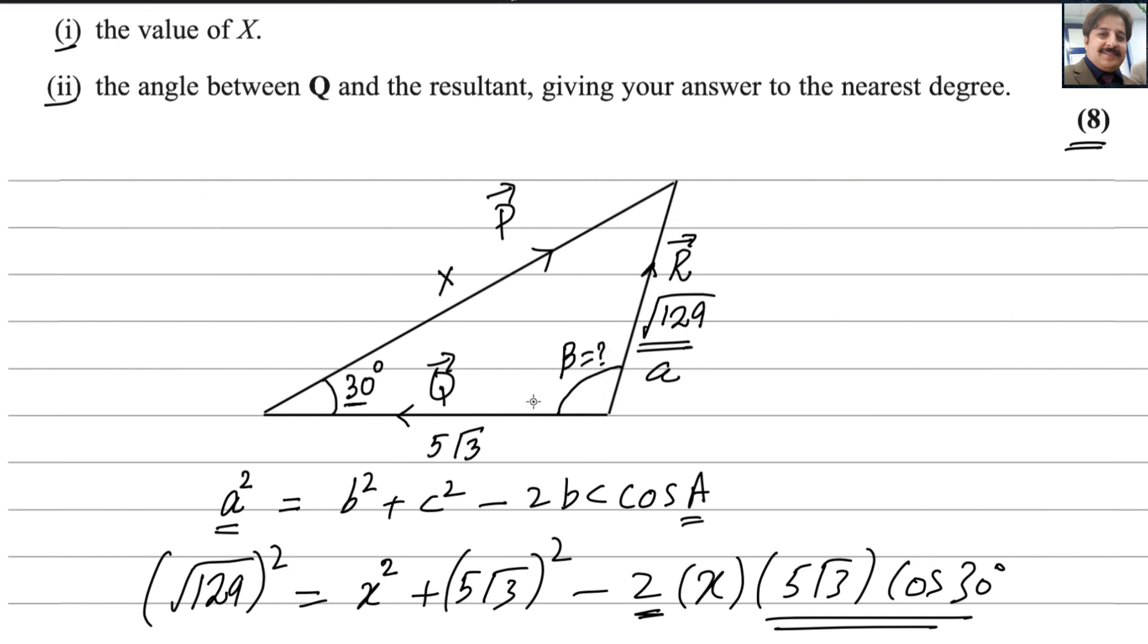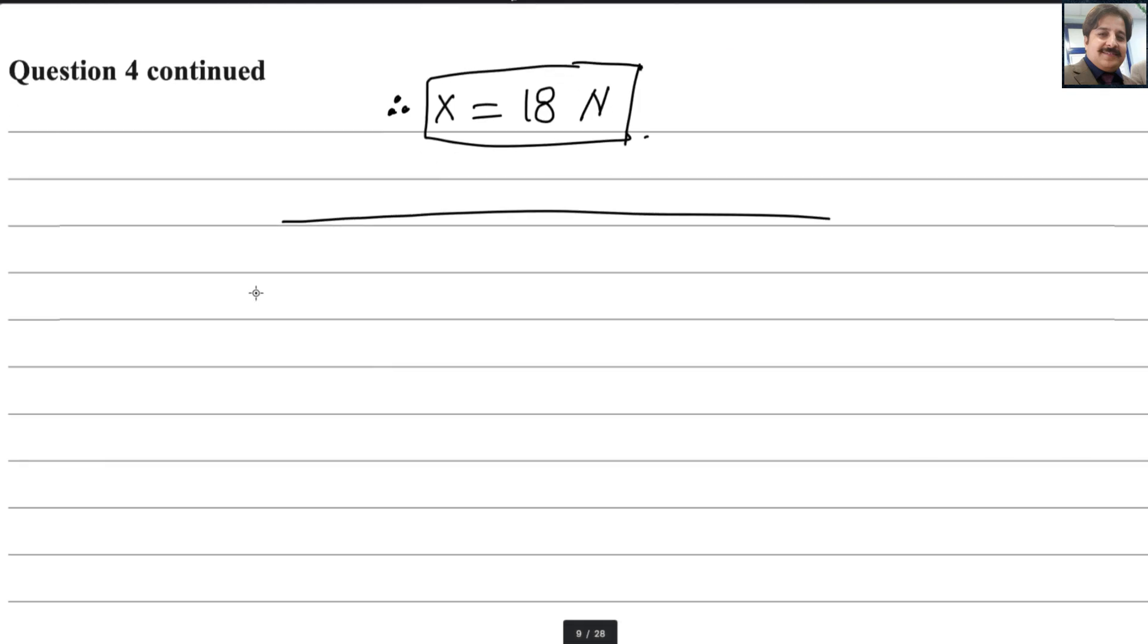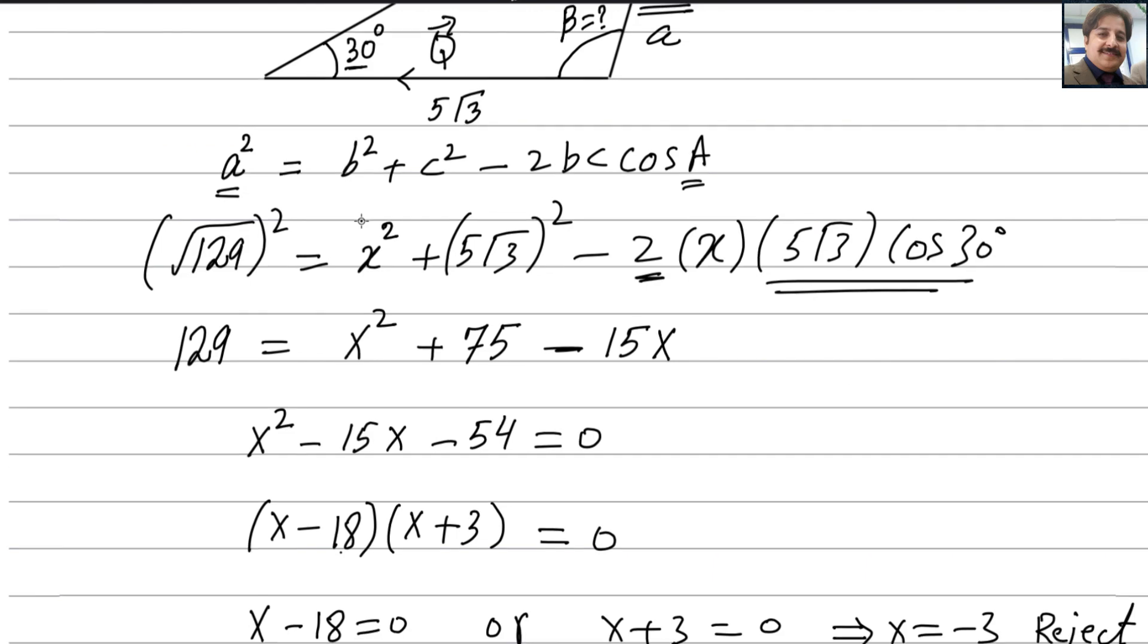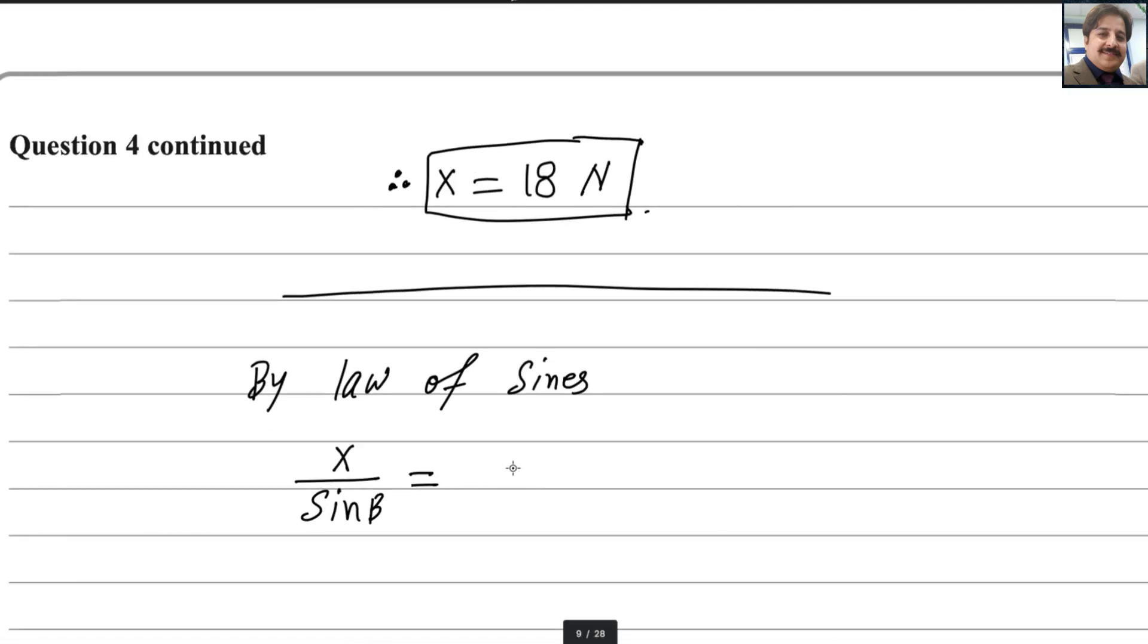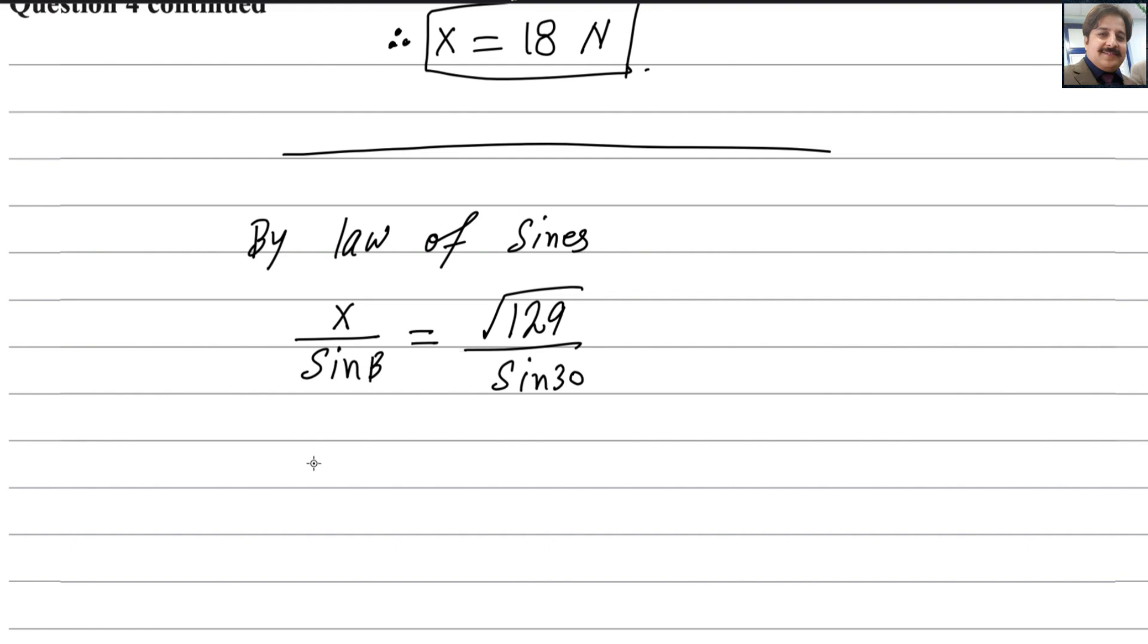We can find beta by using law of sines. It is more easier. This side over sine beta equals to this side over this angle. By law of sines, X over sine beta will be equals to root 129 divided by sine 30. And X we already found that is 18. You can plug in over there.